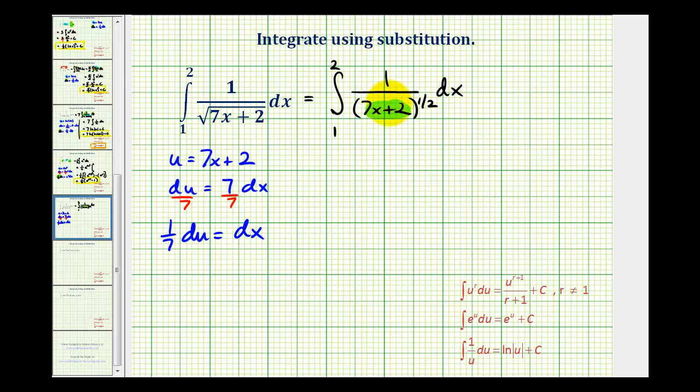So we're going to replace seven x plus two with u. And now we can replace dx with one-seventh du. So let's go ahead and rewrite this in terms of u. Now we don't want to include the limits of integration on here because these limits of integration are in terms of x.